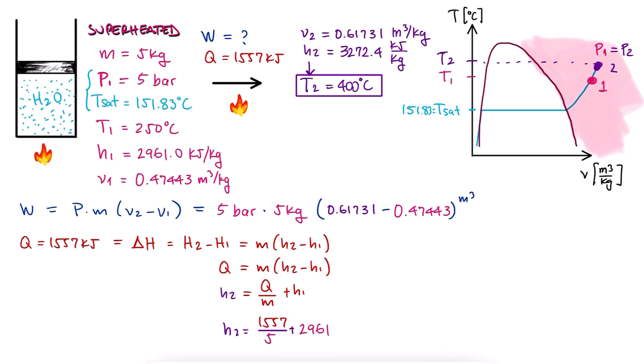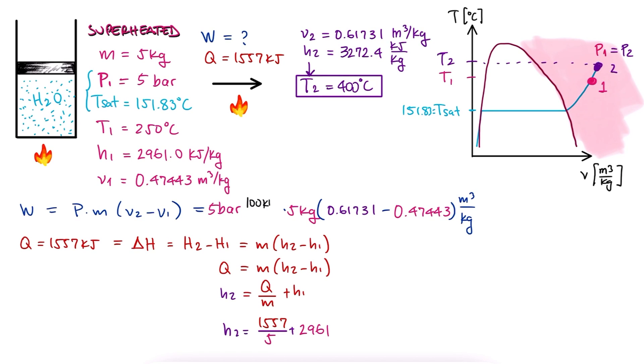Substituting these values in our work expression, and doing a simple unit conversion, we find that the work is equal to 357.2 kilojoules.